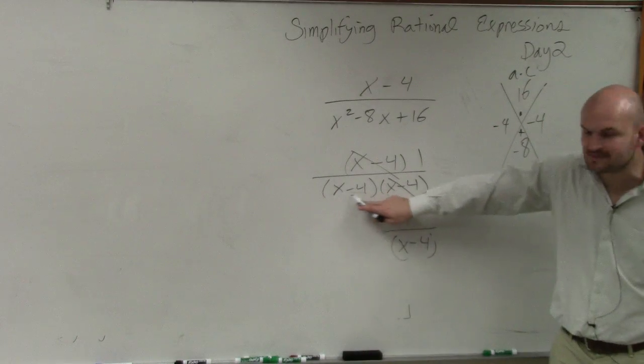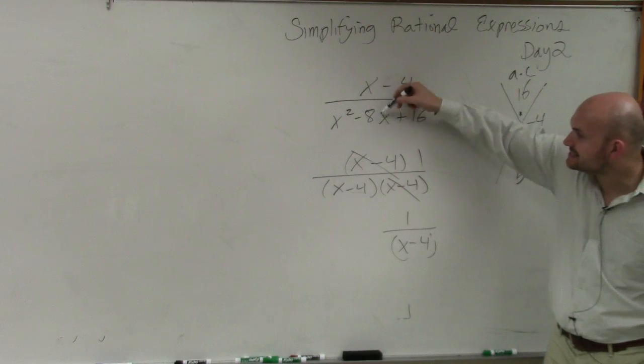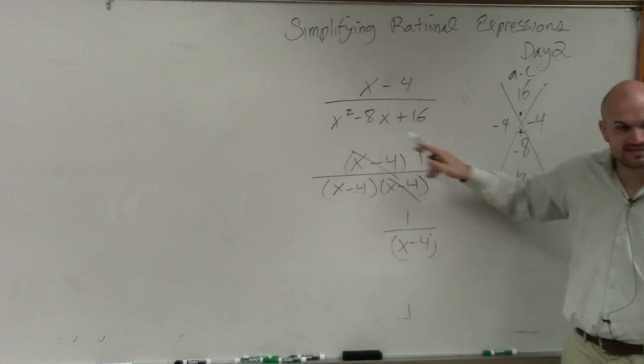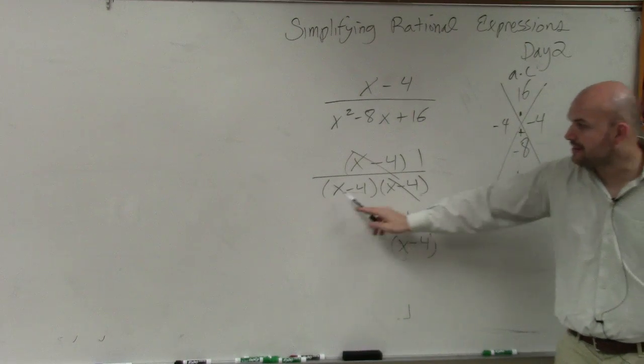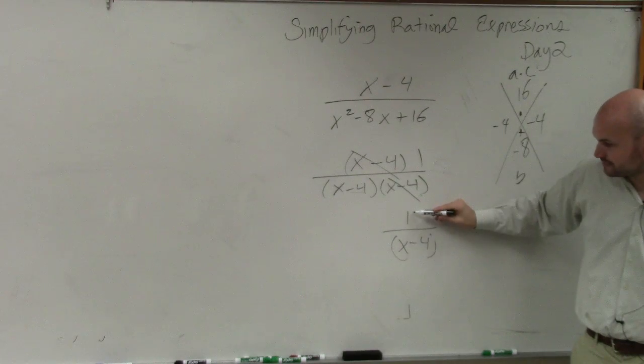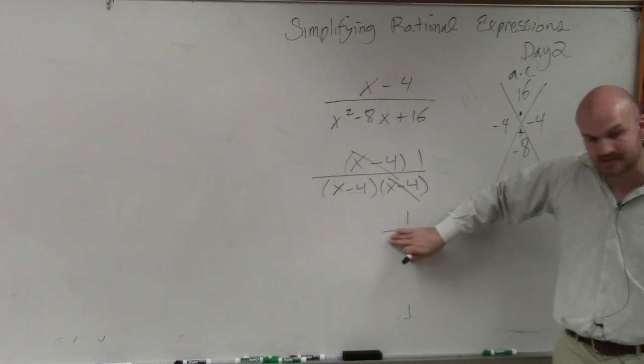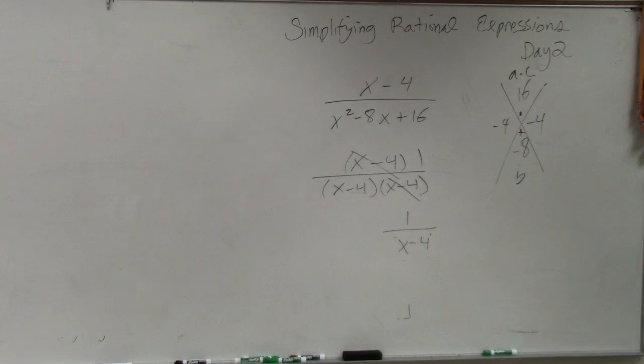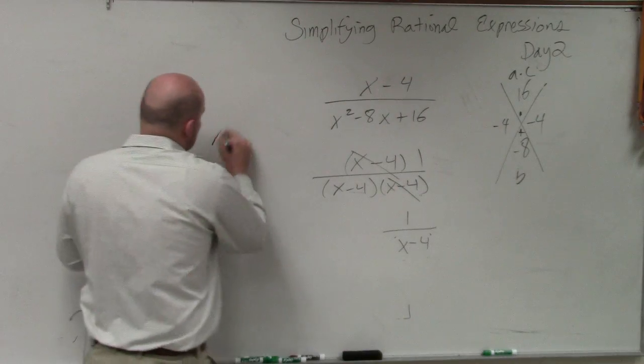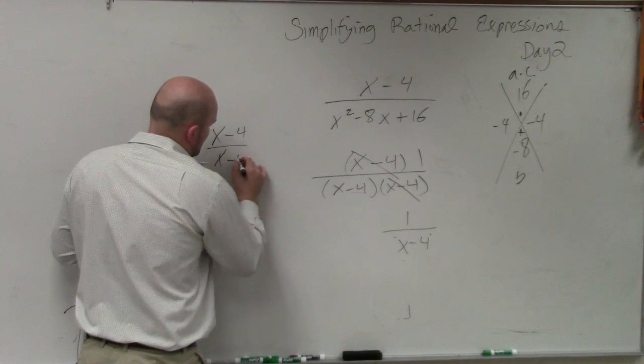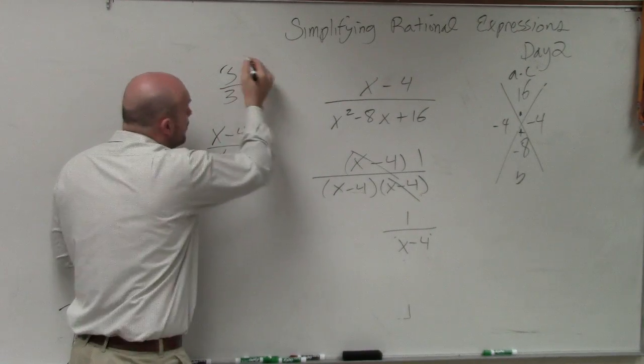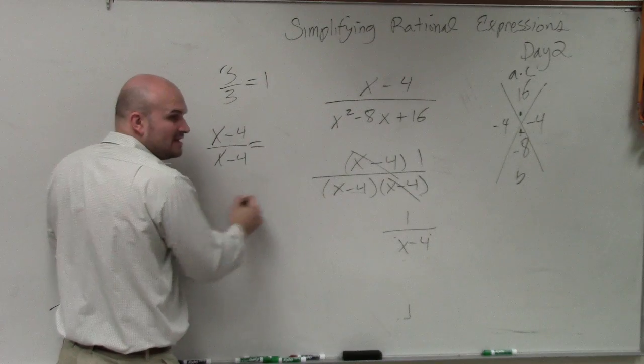There's only one left. It's x minus 4. That's the only thing left. This got factored to this. I factored this out to that. Now that I've factored that out, those two divide to 1. So I'm left with the 1 divided by x minus 4. Does that make sense? Where do you got that one from? Because again, remember, x minus 4 divided by x minus 4 is what? What's 3 divided by 3? 1. x minus 4 divided by x minus 4 is? 1.